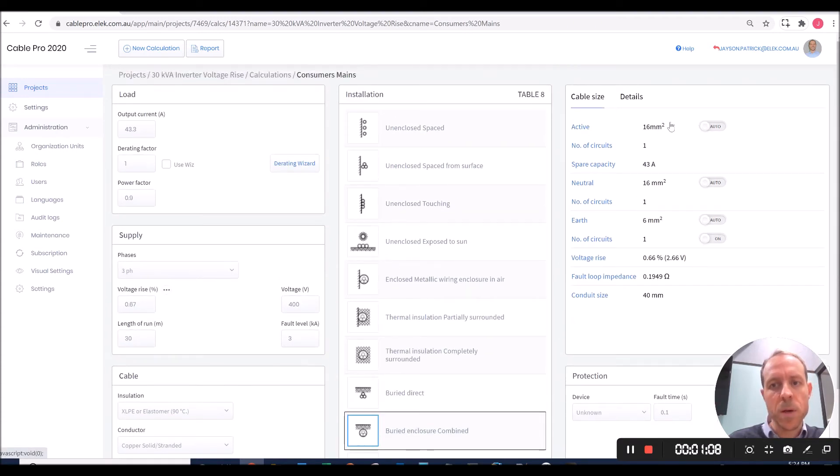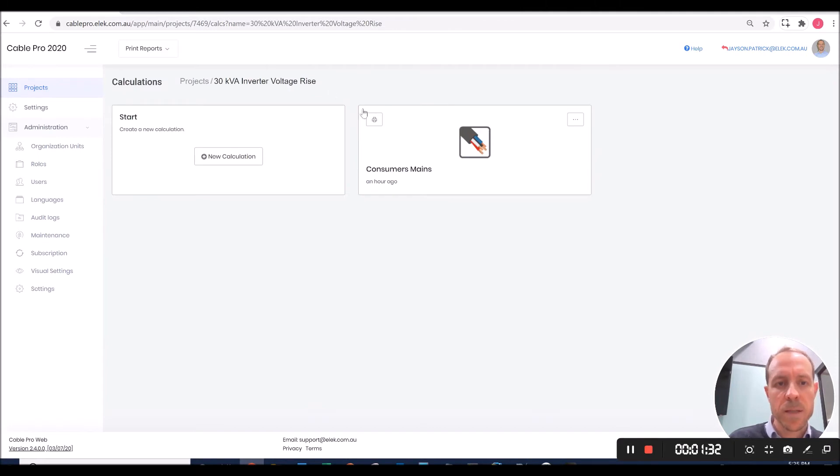CablePro determines a minimum required cable size of 16 square millimeters, which is smaller than the hand calculation of 25 square millimeters. That's because we use the very accurate voltage drop calculation method. Here's the actual voltage drop in percent. We'll go back to the project and perform the same calculation for the final sub-circuit.